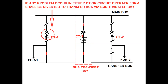In case of feeder one, if any problem occurs either in the CT or circuit breaker of feeder one, the same feeder can be diverted to the bus transfer bay by closing the bus transfer bay's bus side isolator of feeder one and closing the main bus side isolator and transfer bus side isolator of the bus transfer bay. The load can be diverted and power can flow uninterrupted to feeder one — there will be no interruption for problems either in the CT or the circuit breaker.